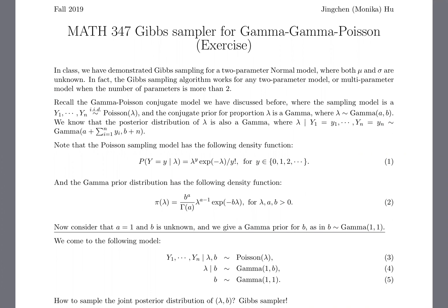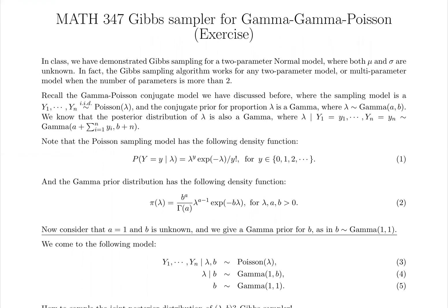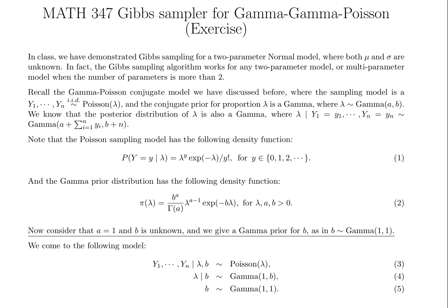The Gibbs sampler we covered in class was for the two-parameter normal model, where both parameters are unknown. But the Gibbs sampler algorithm itself can work for any two-parameter model or even more complex models. In this exercise, we're looking at the Gamma-Poisson setup. The sampling model is Poisson, which is equation one, and the only parameter in the sampling density is lambda. We give a gamma prior to lambda and showed in class that you arrive at a gamma posterior.